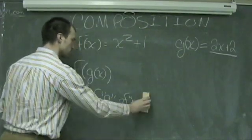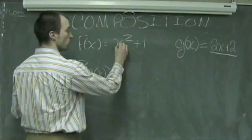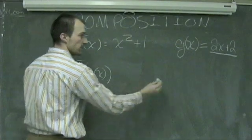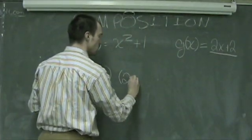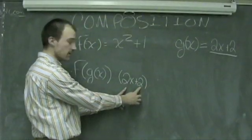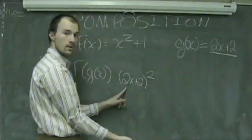So to evaluate f of g of x, we're going to take my function, which is x squared. Well, x is now this g of x function, so it's going to be open parenthesis, which is 2x plus 2, which is g of x, squared, plus 1.